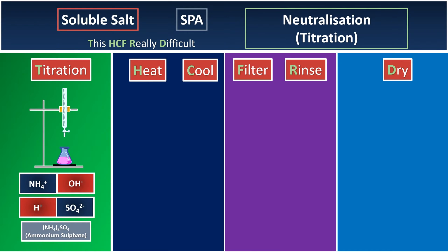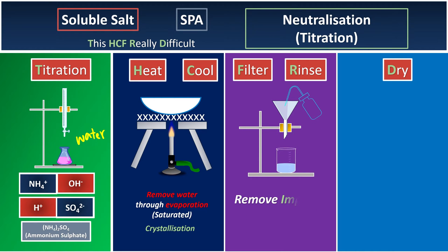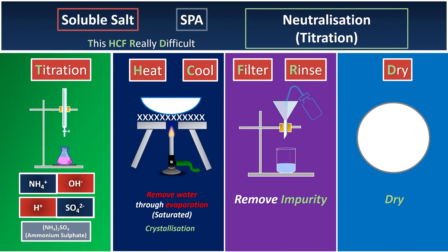Once titration is done, we take the mixture and heat it up to remove the water byproduct until only one third of the solution is left so it becomes saturated. We then let it cool down to room temperature so crystals form. After that, we filter out the impurity using filtration, rinse with distilled water, and dry by pressing the crystals against filter paper.